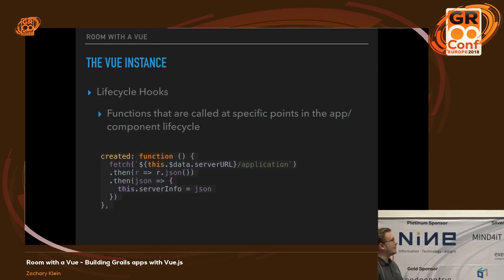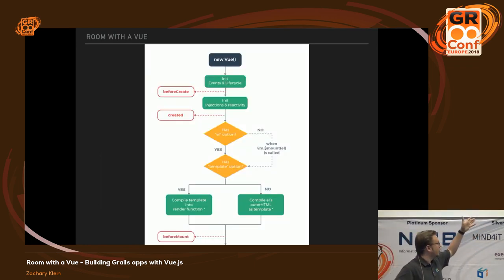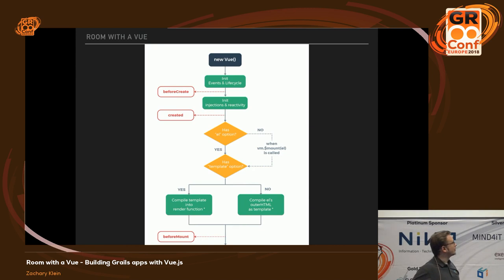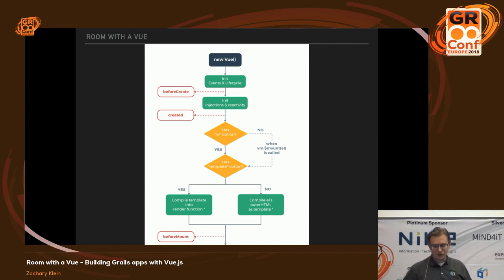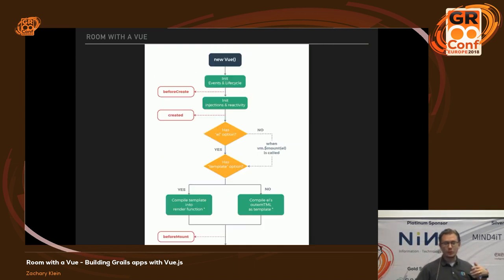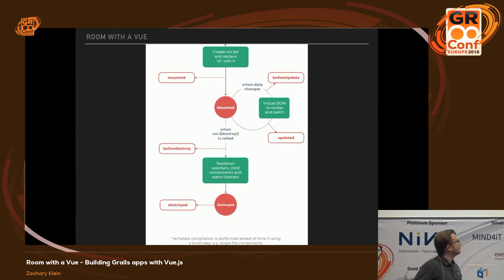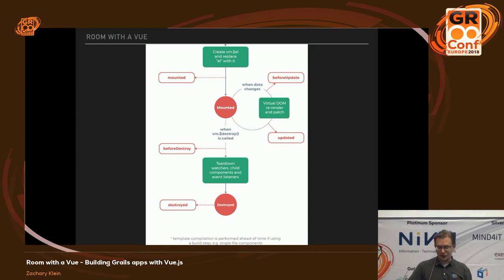Lifecycle hooks are simply methods that are called by Vue at certain stages in the lifecycle of your instance or component. The red outlined boxes in the documentation chart show the potential hooks you can implement on any given component — you don't have to implement any of them, just the ones that interest you. You have hooks for when the component is mounted, noting that it can be created at one point but not yet rendered. So there are hooks for created, mounted, and cleanup hooks like before-destroy and destroyed.